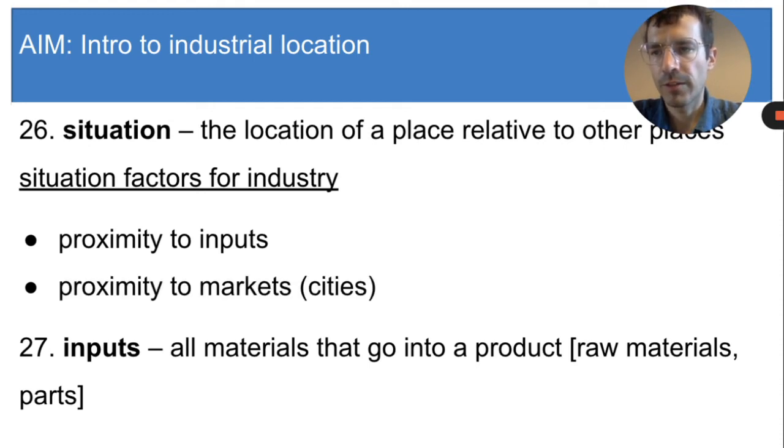The second situation factor for industry is proximity to markets. A market is a place where goods can be sold, and when I say market, what I really mean is a city where there are a lot of people who are potential customers. Certain industries want to locate near cities so that they can quickly and cheaply ship goods to the stores where the goods will be sold.